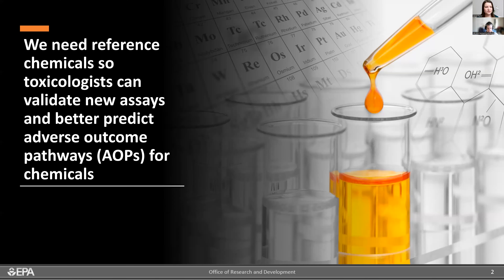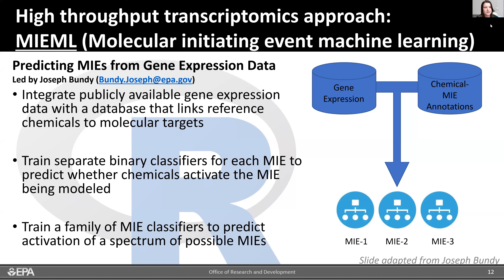Tox21 cross-partner project five, led by EPA and NCBI by Josh Harrell and Steve Ferguson, aims to generate a set of transcriptomic profiles for chemicals that have target annotations in RefChemDB, as a resource for aiding interpretation of HTTR data. Another project applies machine learning — molecular initiating event machine learning, or MEMOL, led by Joseph Bundy — integrating publicly available gene expression data with a database linking reference chemicals to molecular targets, training binary classifiers for each MIE. So far, 51 MIEs have been explored and the approach robustly applied to nine.